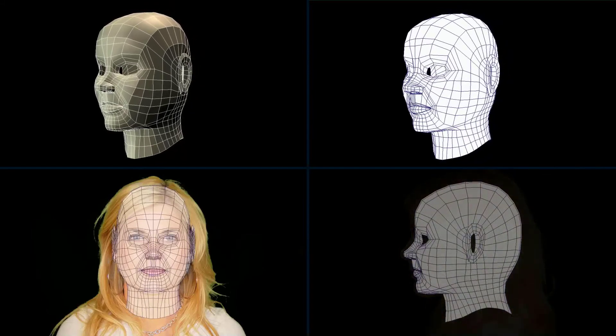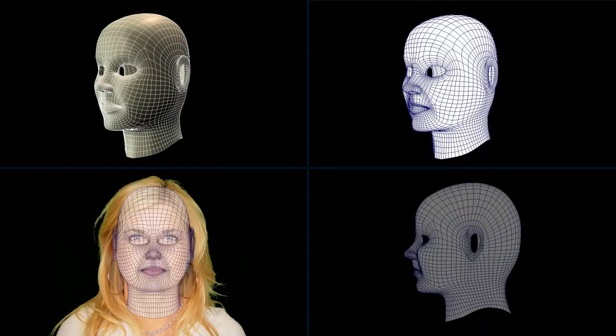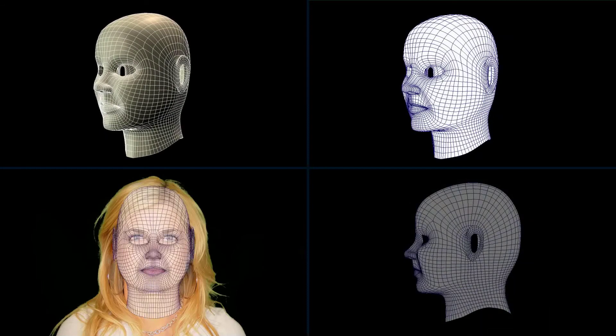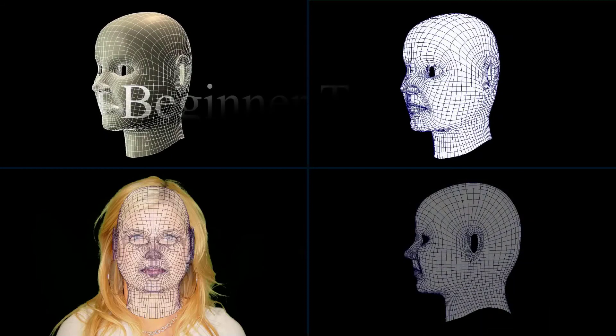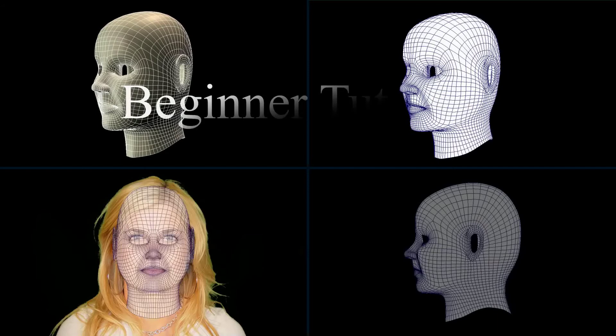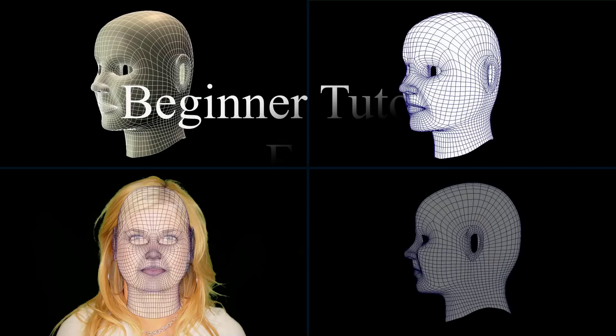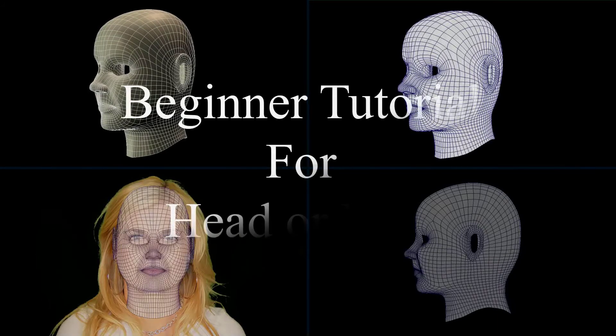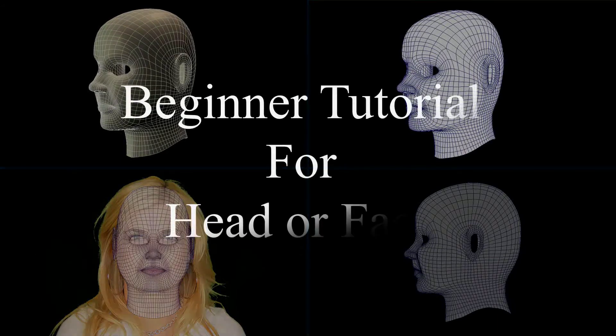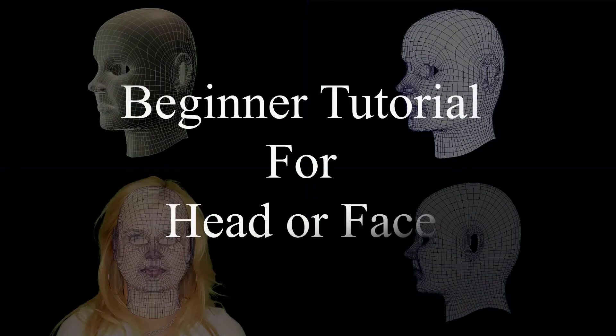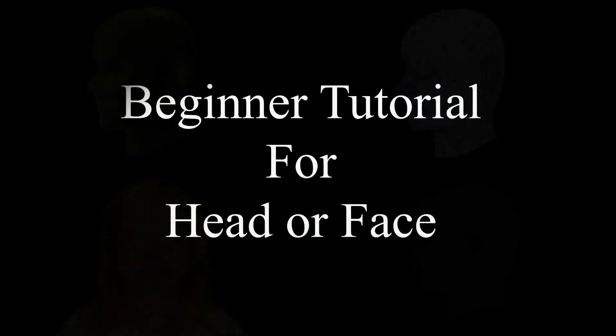At this point, we are done with the modeling process. Go through and check your model. Make sure to add in eyelids and the inside of the mouth and so on, and add extra detail where it is needed. I hope this tutorial was helpful, and if you have any questions at all, please feel free to email me.